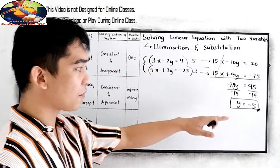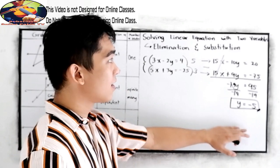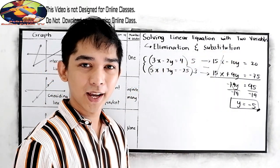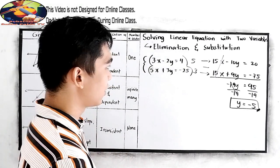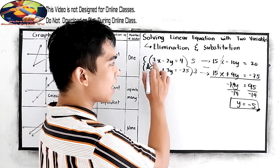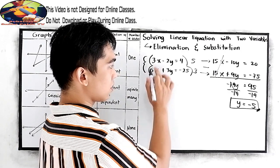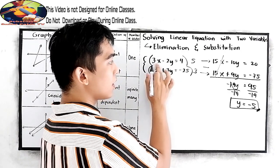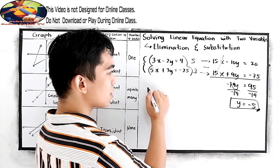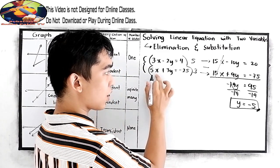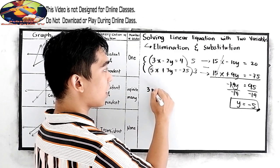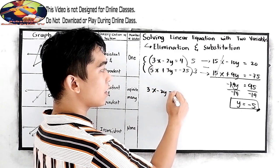Okay, after getting the value for y, let us use the substitution method to find the value for x. So, copy any of our equation, so it can be equation 1 or equation 2. Now, let us use equation 1, 3x minus 2y is equal to 4.